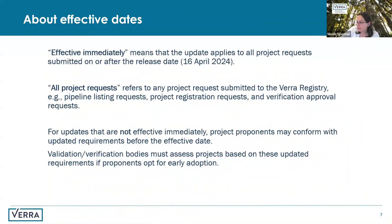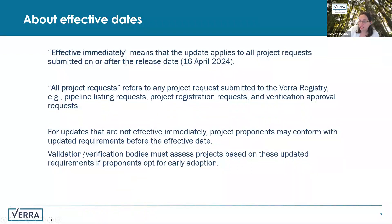Number one: 'effective immediately' means that the update applies to all project requests received by the VIR registry submitted on or after that release date — in this case, the 16th of April 2024. 'All project requests' refers to any project requests submitted to the VIR registry, such as a project registration request or a verification approval request. For updates that are not effective immediately, project proponents have the option to conform with those updated requirements before the effective date if they so wish. And if they do choose to do that, the validation and verification bodies must assess the projects based on those updated requirements.